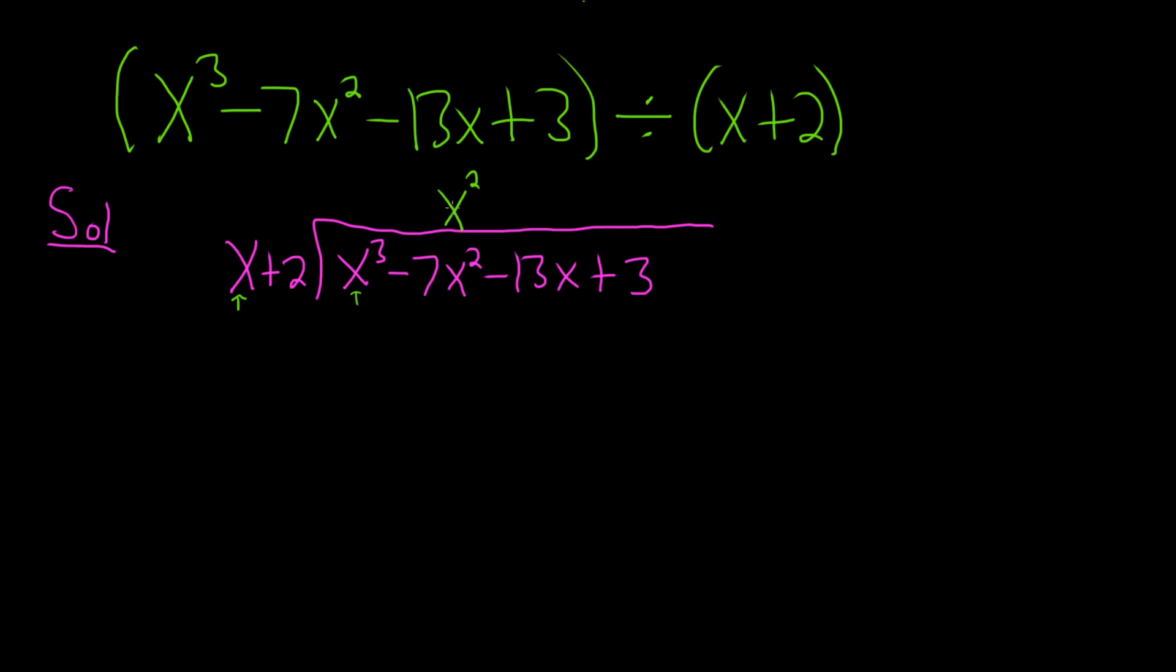Now you actually multiply. x squared times x is x cubed. x squared times 2 is 2x squared. Then I draw a line. I put a big parentheses and a giant minus sign, and then I add. That's just how I do it. It's basically subtracting. Some people switch the signs. I just like to put a minus sign and add. Same thing. So x cubed plus negative x cubed is 0,